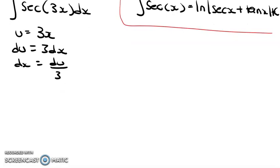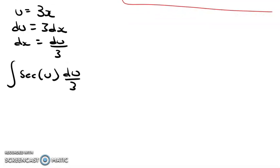Then we're going to go ahead and substitute that in. We're going to say secant u du over 3. We're going to factor out that 1 over 3 that's with the du, so we get 1 over 3 integral of secant u du.